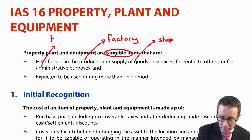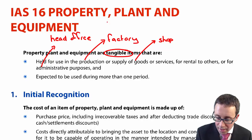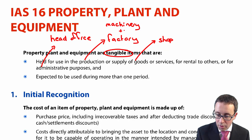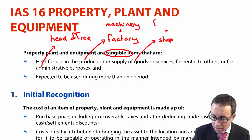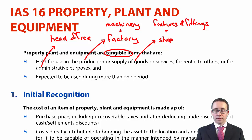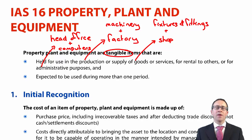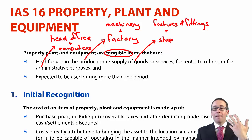PPE also covers assets used for admin purposes, such as your head office. Within your factory you'll have machinery, in your shop you'll have fixtures and fittings — the shelves and tills — and in the head office your computers. The main categories tend to be land and buildings, plant and machinery, motor vehicles, and fixtures and fittings.